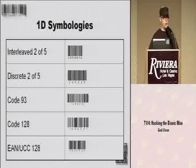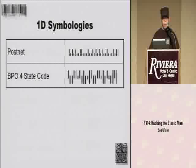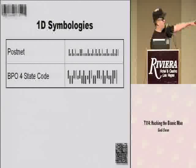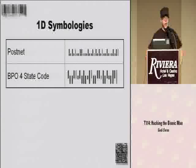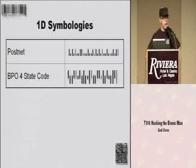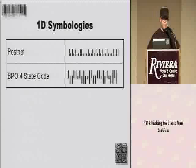Then you have really weird barcodes. The upper one you've probably seen on envelopes — this is actually a PostNet barcode, which is routing information for letters. The British, always being their separatist island folks, of course had to invent their own postal barcode. It roughly looks the same, but it's the British one.